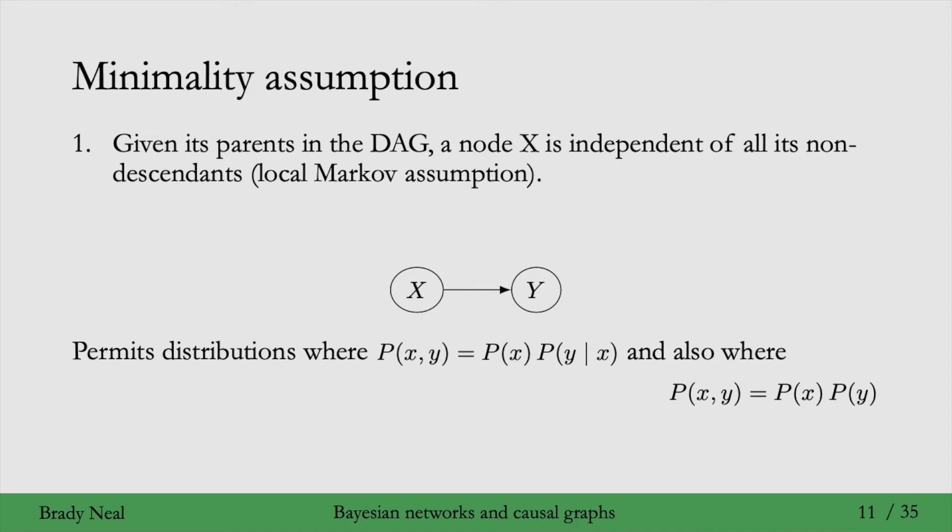And the local Markov assumption for this graph also permits the fully factorized distribution. So that's where P of x comma y equals P of x times P of y. In distributions that factorize that way, x and y are completely independent, right? So even though there's an arrow from x to y, x and y don't depend on each other. And that's not really what we want. It doesn't seem very intuitive.